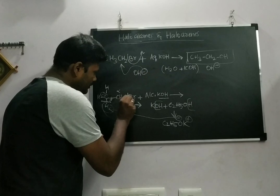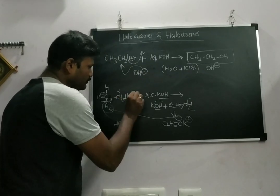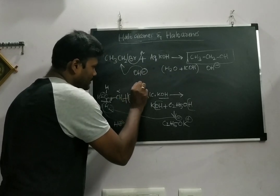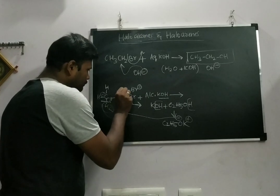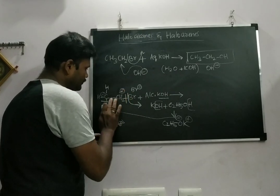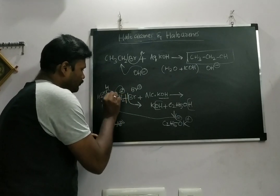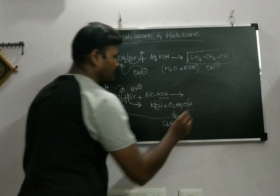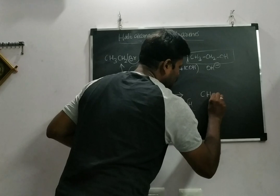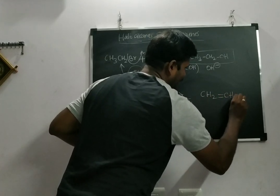This bond is getting broken, it goes as Br-, leaving a positive charge. Now we have one positive charge and one negative charge. These will form a bond, giving you an alkene product.